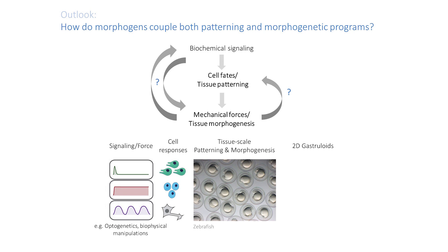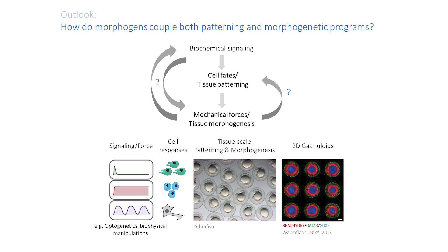We're also very excited to compare and contrast what we find in zebrafish with gastruloids — colonies of human embryonic stem cells that we can keep in the dish and induce to gastrulate. They can be induced to specify into the different germ layers upon addition of BMP4, allowing us to compare and contrast what happens across different species.